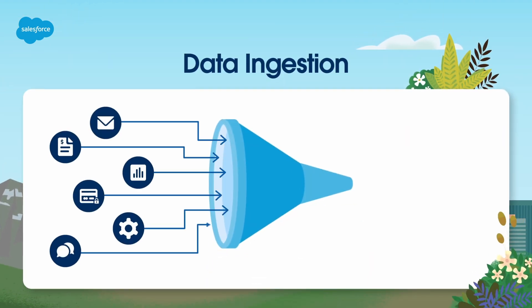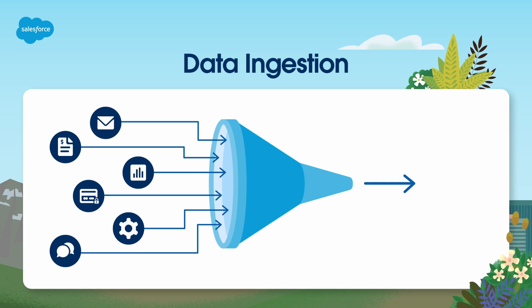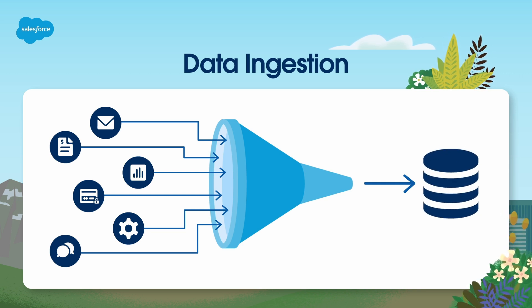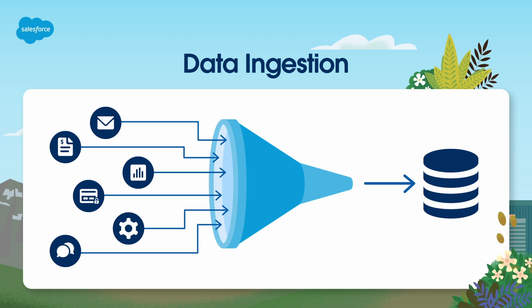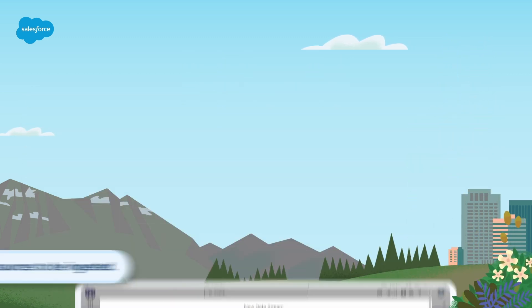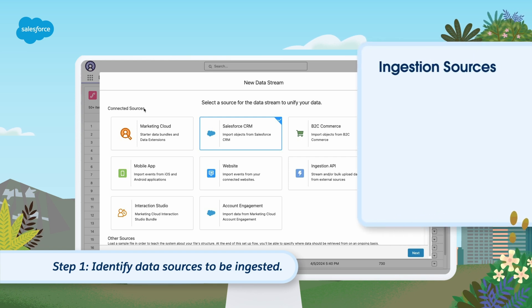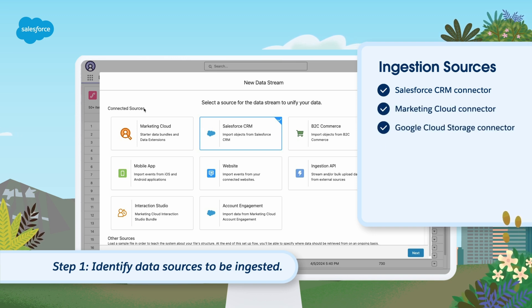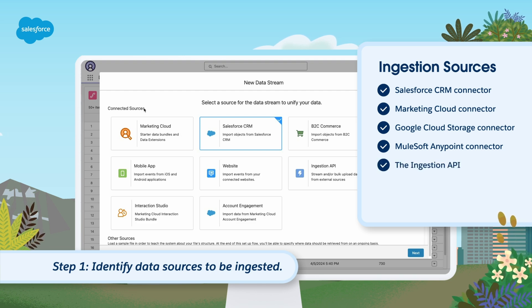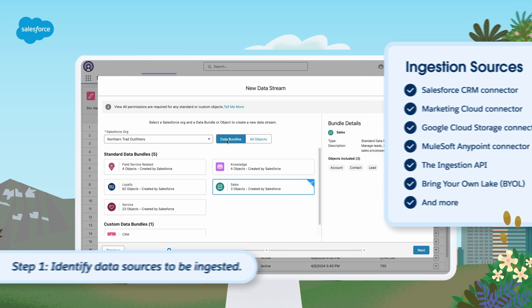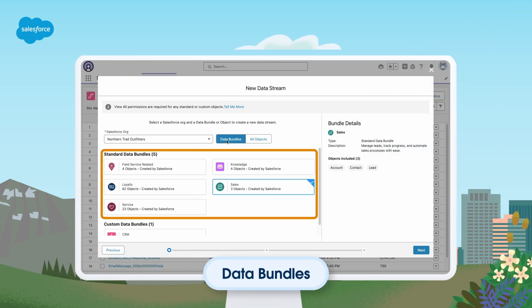The data ingestion phase starts by connecting a data source as is, meaning its data remains in its original form. A data stream is then created to extract this data from the source and bring it into Data Cloud, where it is stored in a data lake object and made ready to be mapped to a data model object. Only this mapped data can be used for Data Cloud segmentation and activation. To complete the data ingestion phase, follow these steps. Step 1: Identify data sources to be ingested. Begin by deciding what data sources you want to connect. You can connect your data sources in several ways, including via the Salesforce CRM Connector, Marketing Cloud Connector, Google Cloud Storage Connector, MuleSoft AnyPoint Connector, the Ingestion API, Bring Your Own Lake or BYOL, and more.